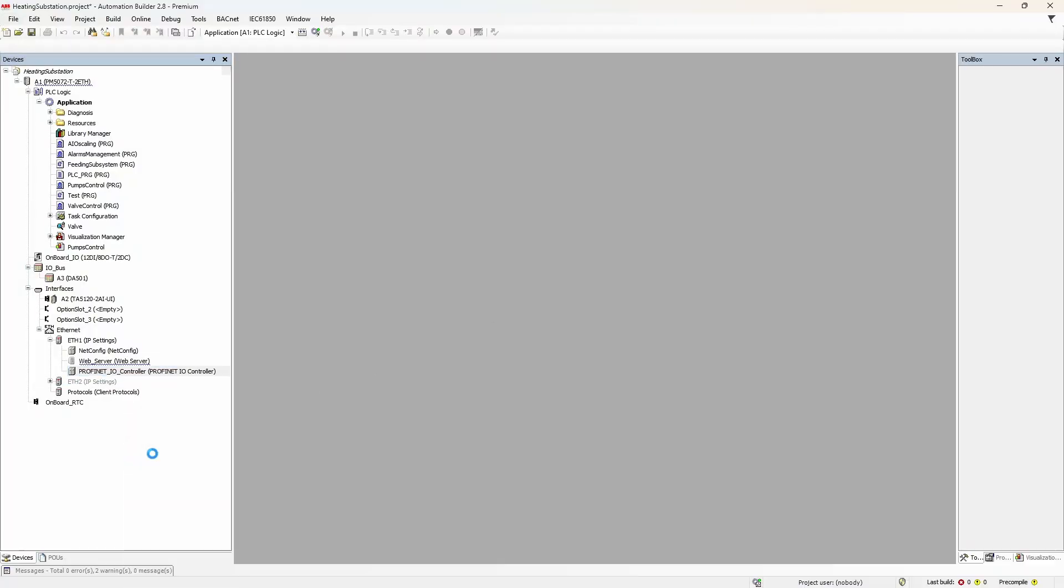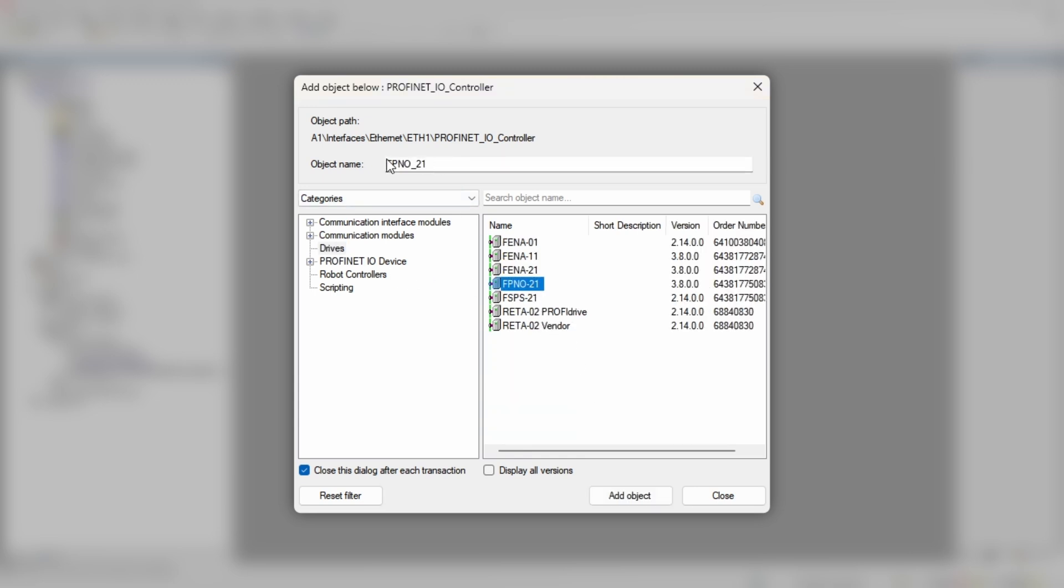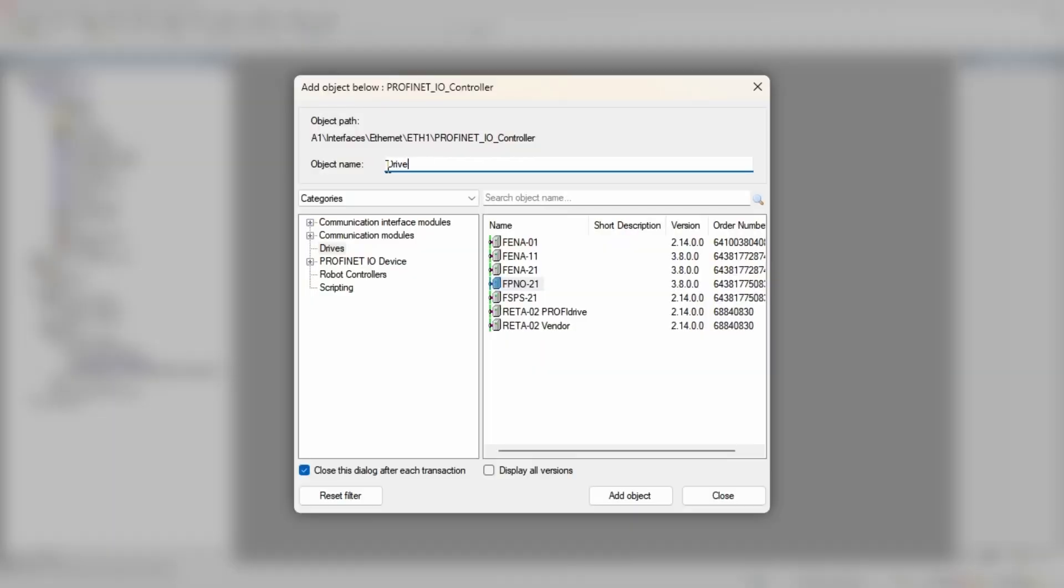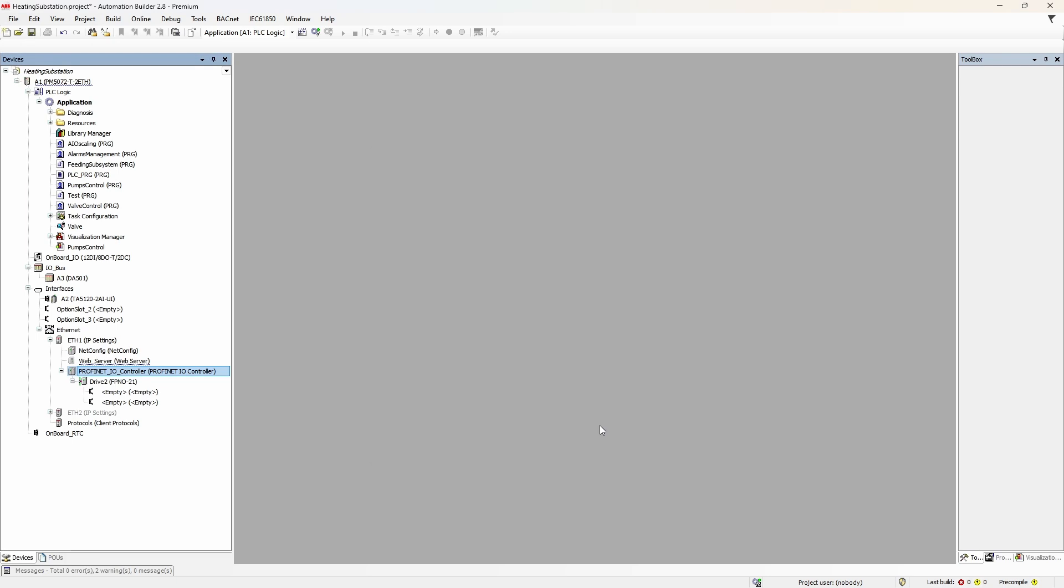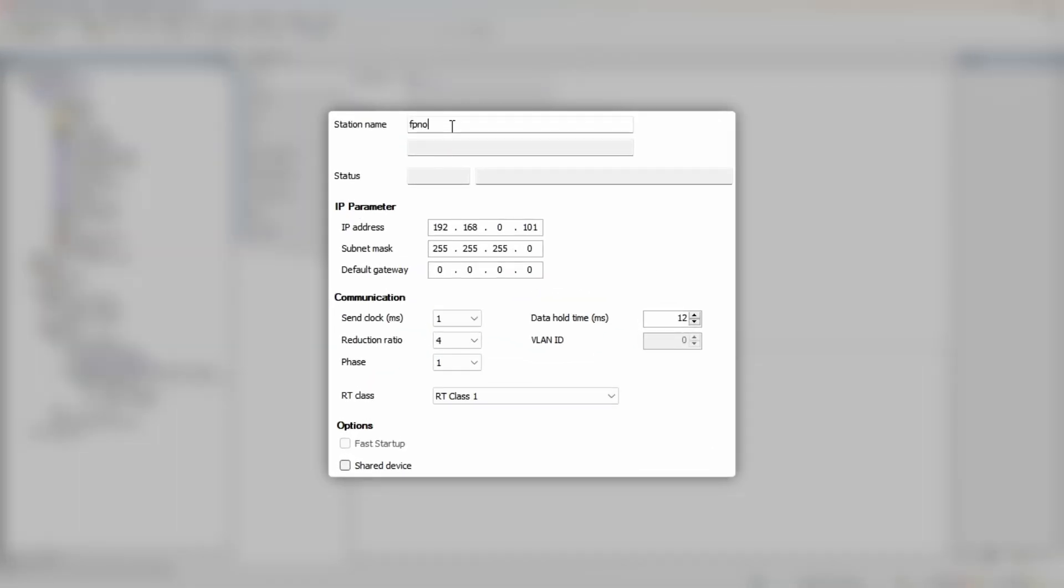Now we can start with the programming part. Under ProfiNet.IO controller, add an object, select category drives, and then adapter type installed into the drive—most likely it's going to be FBN021. Give the object a meaningful name and hit add. Now go to settings of the ProfiNet.IO device and specify station name ABB drive hyphen 2. Let's also make the IP address 102 and increase the communication cycle so it's close to the PLC main cycle.